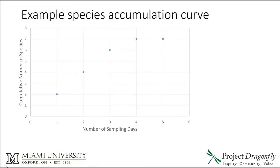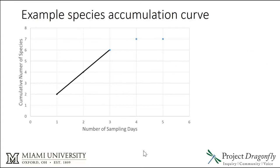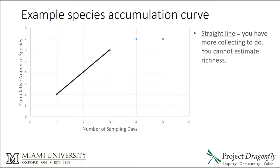One way to look at this is using a species accumulation curve. Say you go out to the forest looking for birds and you see two species on day one — this is the number of sampling days on the x-axis. On day two, you see an additional two species, so the cumulative number is now four. On day three, you see another two species, so you're at six. If you stopped at day three, you have a straight line showing the relationship between effort and number of species, and that straight line could theoretically increase forever — so you cannot estimate species richness and you have more sampling to do.